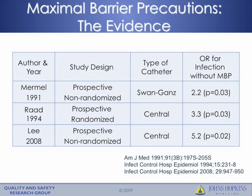There have been three studies that have addressed whether maximal barrier precautions are important in prevention of CLABSIs. The first was performed in 1991 by Murmel and colleagues — a prospective, non-randomized study examining the use of maximal barrier precautions for placement of Swan-Ganz catheters. The odds ratio for infection without maximal barrier precautions was 2.2, meaning that use of maximal barrier precautions effectively decreased the risk of subsequent CLABSI.